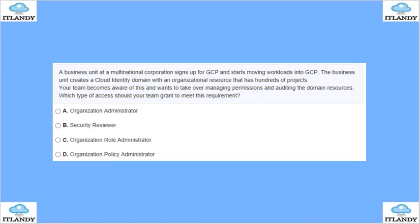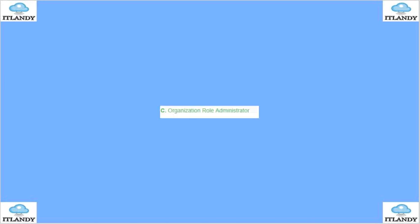Next, a business unit at a multinational corporation signed a software agreement and is moving workloads to GCP. The business unit created a Cloud Identity domain with an org resource that has hundreds of projects. Your team becomes aware of this and wants to take over managing permissions and the auditing side of it. What type of access should your team grant? The options are org admin, security reviewer, org role administrator, or policy admin. The answer is C — you need to assign org role admin.